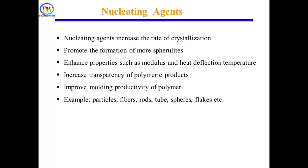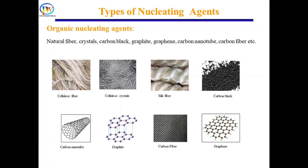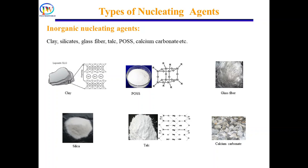Nucleating agents can be in the form of dust particles or deliberately added foreign materials such as particles, tubes, fibers, rods, spheres, flakes, etc. Nucleating agents can be classified into two categories: inorganic and organic. Organic nucleating agents include natural fiber, crystals, carbon black, graphite, graphene, carbon nanotubes, carbon nanofibers, etc. Inorganic nucleating agents include inorganic salts, oxides, clay, silicates, glass fiber, talc, and calcium carbonate, etc.